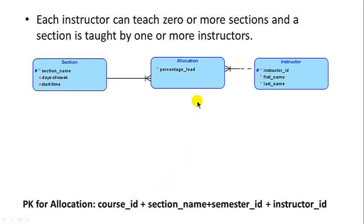In this kind of scenario you might consider giving allocation its own primary key, because it's got too much going on. In fact, what we'll do — as you'll see later on — is for every associative entity we'll just make it a practice to give it its own primary key. So we won't really think about key migration; we'll just give it its own primary key, and then all those other things will simply be foreign keys — required foreign keys.